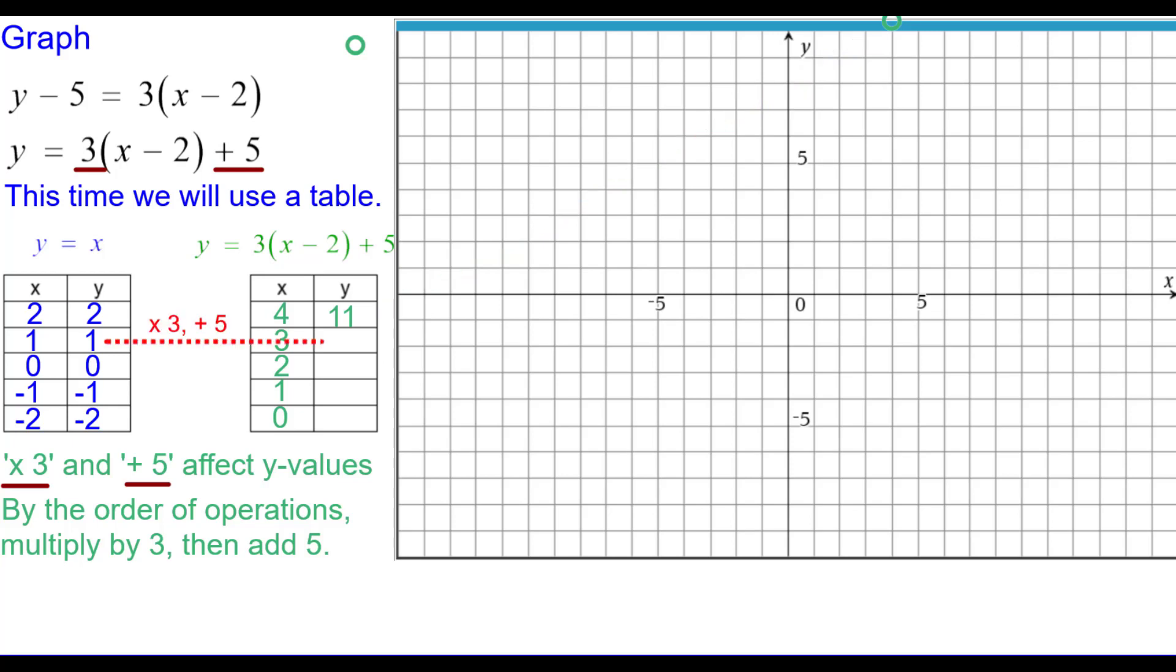Next, it will be 1 times 3 plus 5 and that would be 8. And so now we'll plot the point 3 comma 8. 0 times 3 plus 5 is 5.